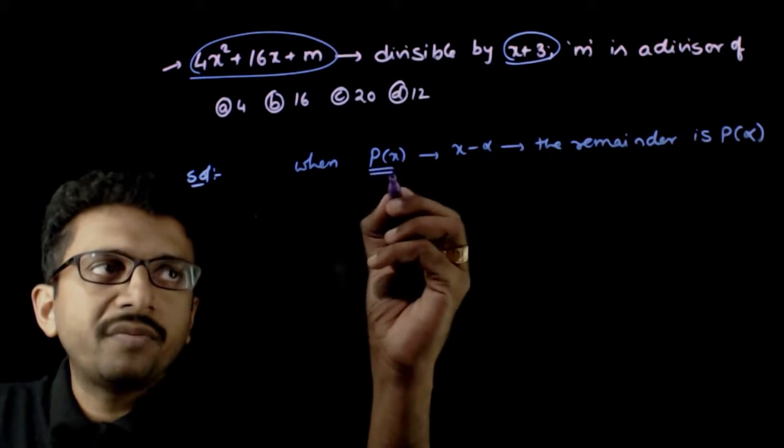So if this expression has to be divisible by x plus 3, m has to be equal to 12. So m is a divisor of which of these numbers? Option D is the right answer to this question. Thank you.